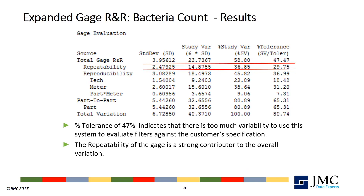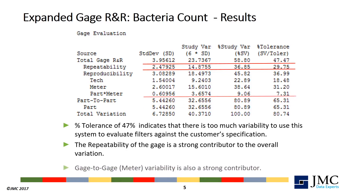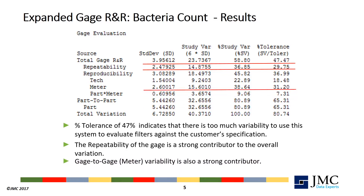The estimate of the repeatability variation shows it is one of the strongest contributors to the overall variation. Gauge-to-gauge variation was also identified as a strong contributor. These conclusions guided the follow-up activities to the study.